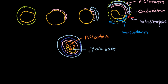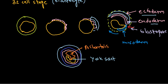The ectoderm produces the nervous system, parts of the eye, feathers, beak, claws, and skin. Endoderm produces the digestive system and different secretory organs like the liver. The mesoderm — the intermediate layer between ectoderm and endoderm — produces the circulatory system, skeletal system, muscle system, reproductive organs, and excretory system. In a sense, production from different layers remains the same across species like chicken, frog, or others, but the process of cleavage and gastrulation varies greatly. This is gastrulation in chick in a nutshell.